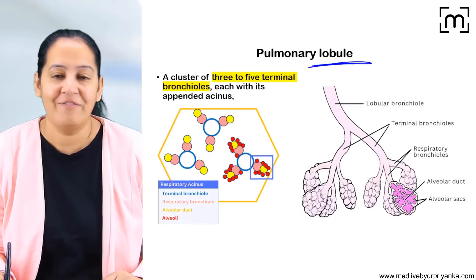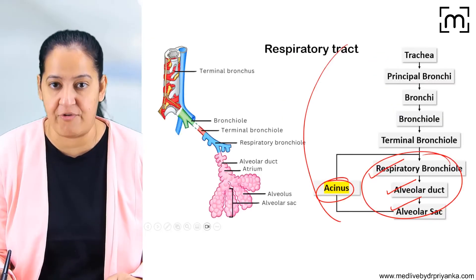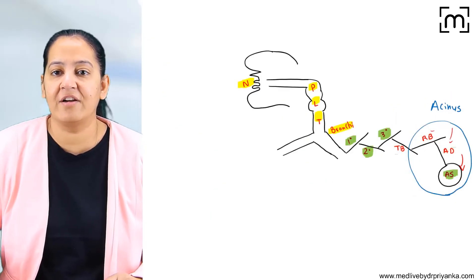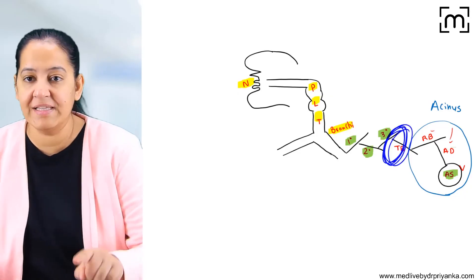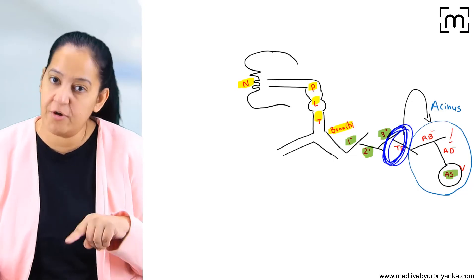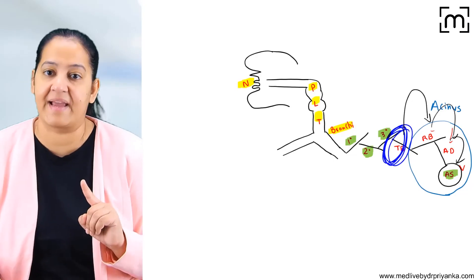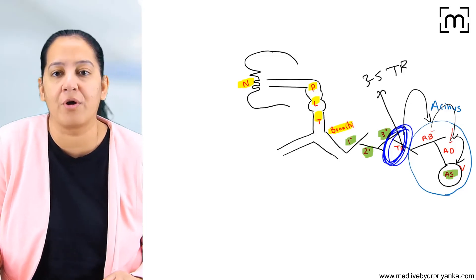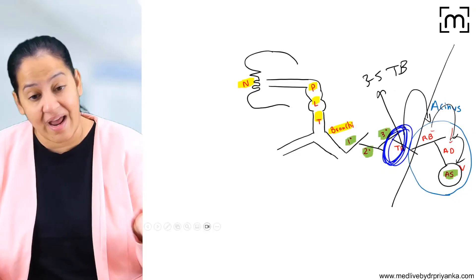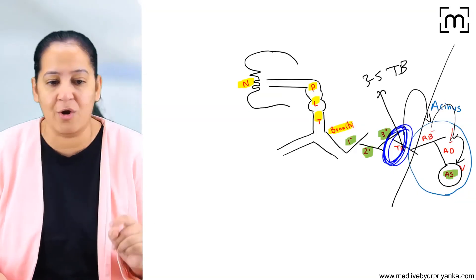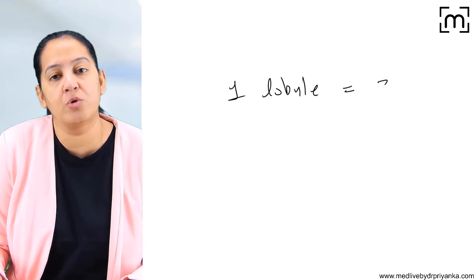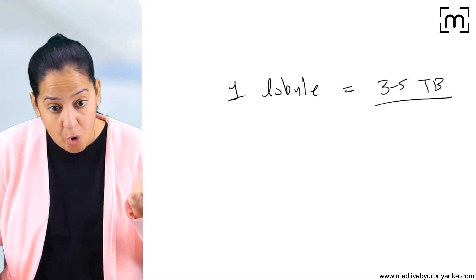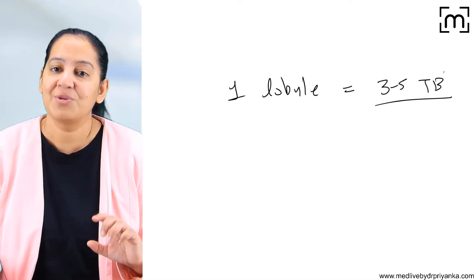Now coming to the lobule. We have seen the entire respiratory tract. Let us take a terminal bronchiole. Terminal bronchioles give rise to respiratory bronchioles, respiratory bronchioles give rise to alveolar ducts, and alveolar ducts give rise to alveolar sacs. If we take 3 to 5 terminal bronchioles together, all the appendages which arise from those 3 to 5 terminal bronchioles constitute one lobule. So one lobule equals 3 to 5 terminal bronchioles and all the appendages arising from them.